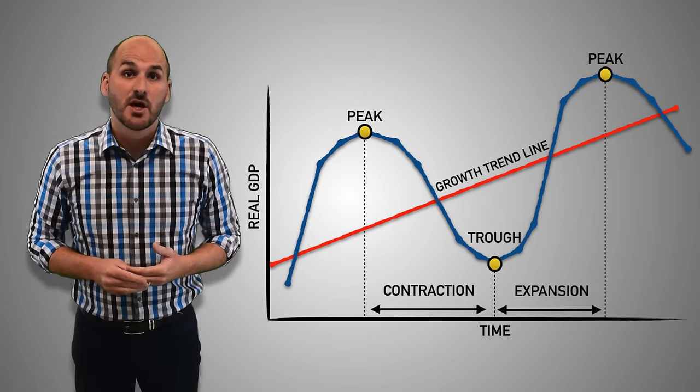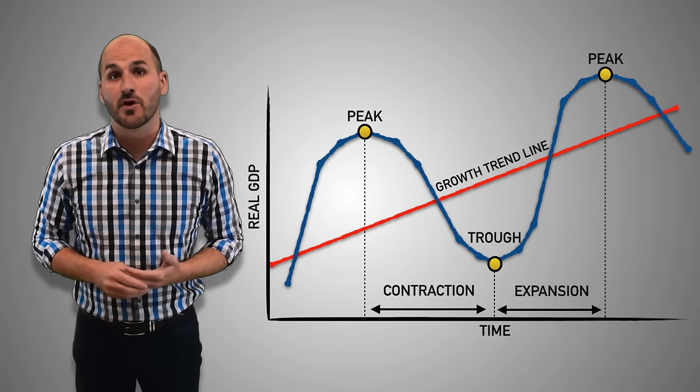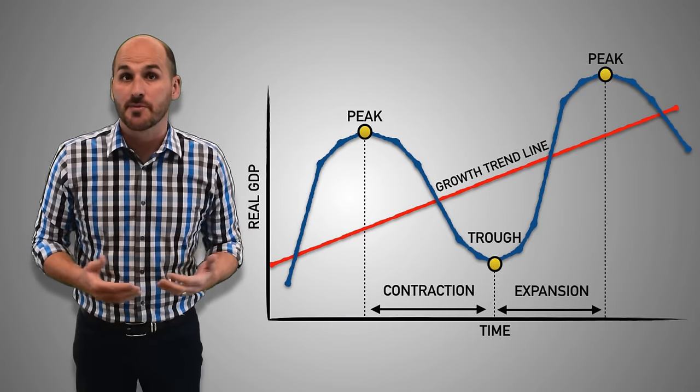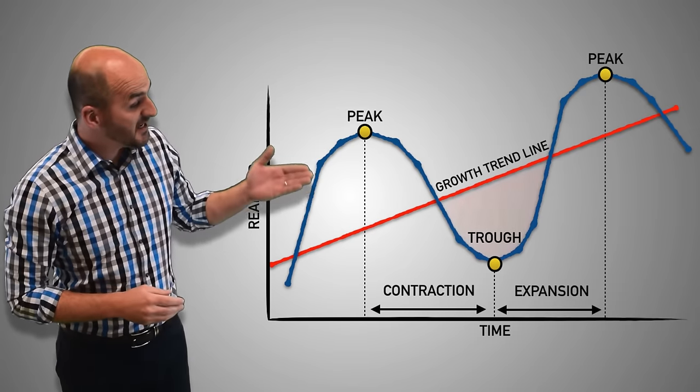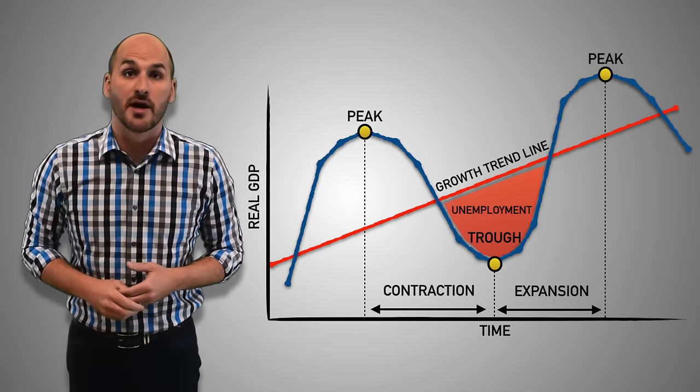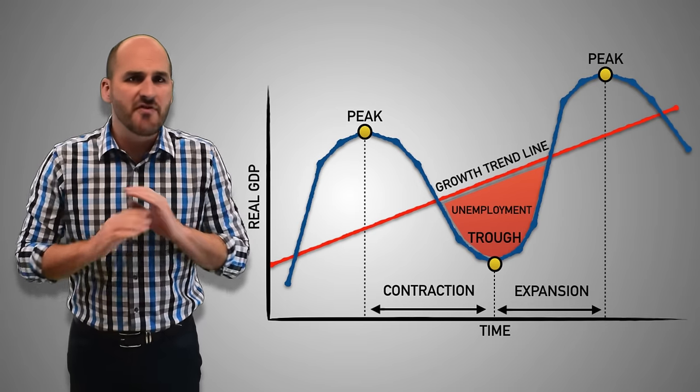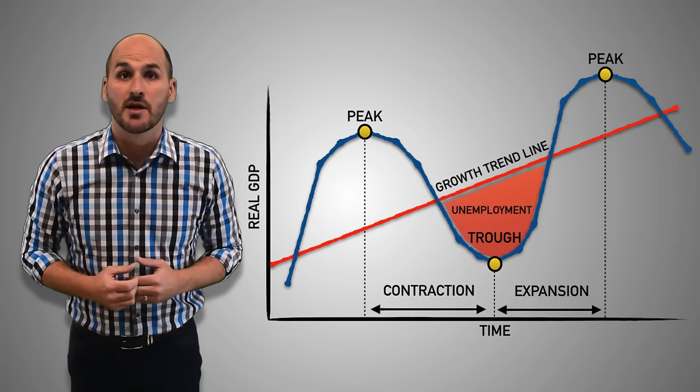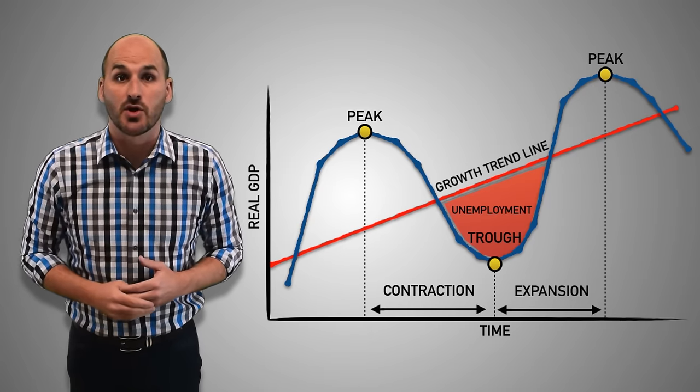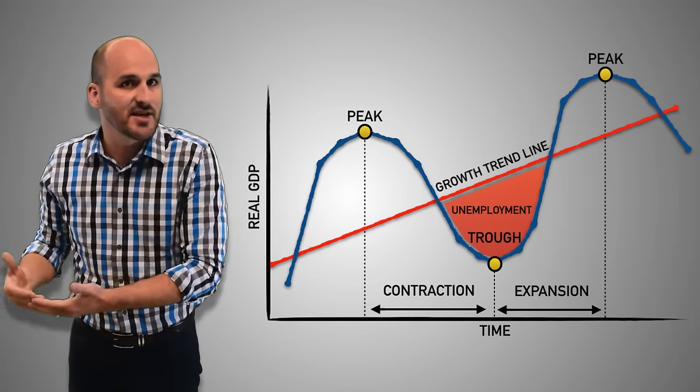When the economy contracts, the economy experiences excessive unemployment as jobs are lost when the economy shrinks. The level of excessive unemployment is visualized as the space between the trough and the growth trend line on our business cycle. A trough of any type means the economy is failing to satisfy the goal of preventing unemployment because excessive job loss is occurring because the economy is contracting instead of growing.